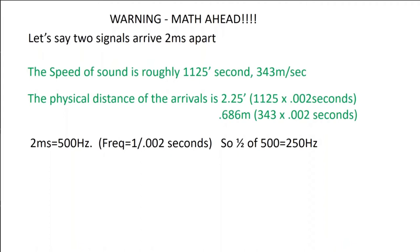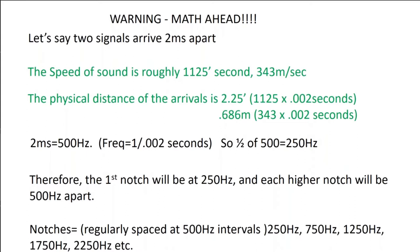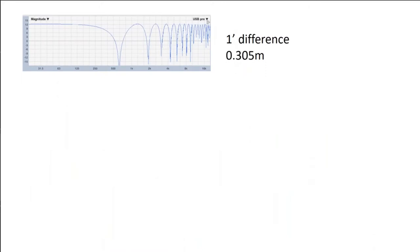Here are some examples of what it looks like — this is an electronic measurement, so it's textbook perfect comb filtering. With a one-foot difference you have notches starting a little over 500 Hz. A two-foot difference is lower because the longer difference means lower frequency. With half the distance the notches are wider apart but start up higher. The greater the distance between arrivals, the lower the first frequency and the closer together the notch frequencies are on a Hz standpoint.